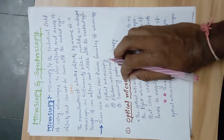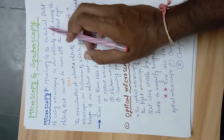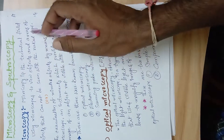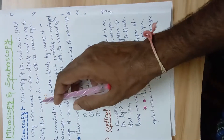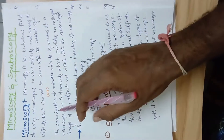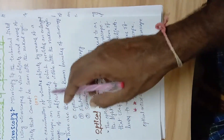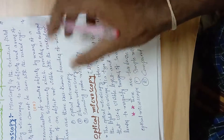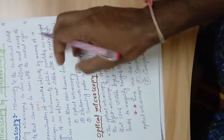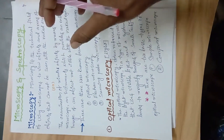First of all, what is microscopy? Microscopy is the technical field of using microscopes to view objects and areas of objects that cannot be seen with the naked eyes. Another meaning: the examination of minute objects by means of a microscope, an instrument which provides an enlarged image of objects not visible with the naked eyes. So the main concept of microscopy is to enlarge small objects.